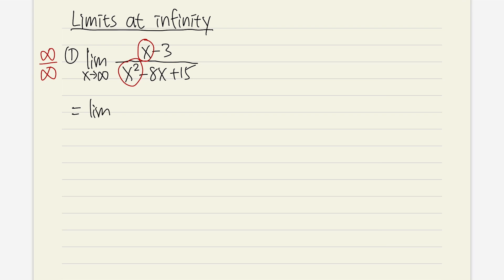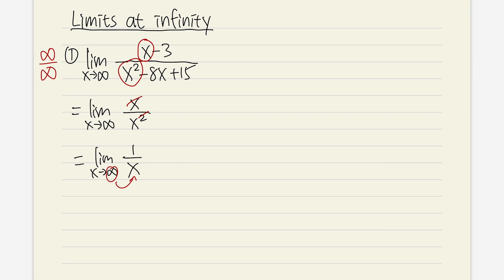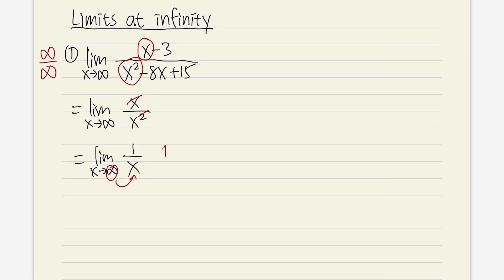We are really just talking about the limit as x approaching infinity of x over x squared. We can simplify this — x cancels — and we get the limit as x approaching infinity of 1 over x. If you plug in infinity, we get 1 over infinity. When we have 1 over infinity, we can draw a conclusion: the answer is just 0. Anytime you have a finite number divided by infinity, you get the limit to be 0.